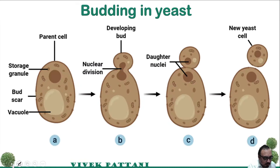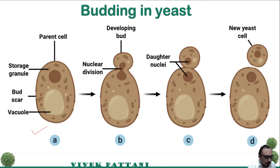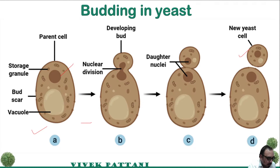Regarding reproductive structures, let's look at budding in yeast. A parent cell contains storage granules. In the next stage, nuclear fusion occurs and after the nuclei divide, a daughter cell is formed. Finally, a new cell is released into the medium. I am going to end my lecture here — please join the WebEx session.